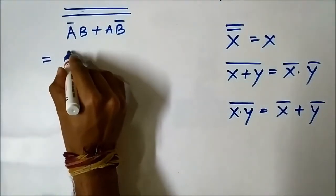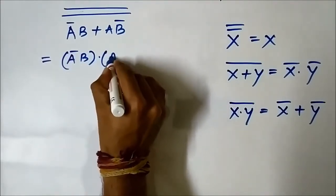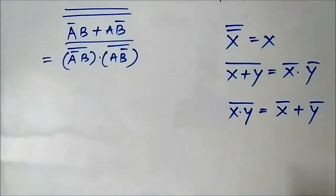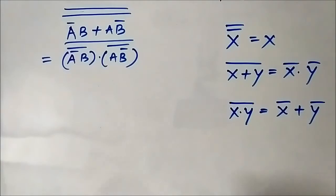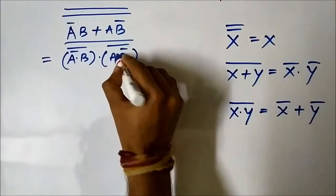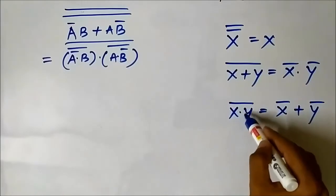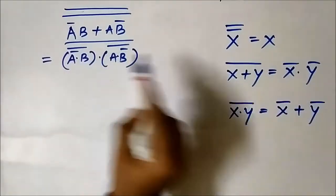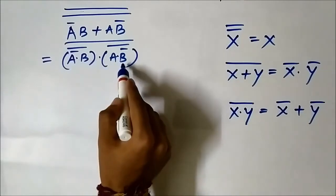If an OR expression is whole complemented, we get an AND expression with the individual terms complemented. So we will convert this OR into AND first. We are breaking the top complement, so it will be: A complement B and AB complement, whole complement. We have converted this expression into this form.